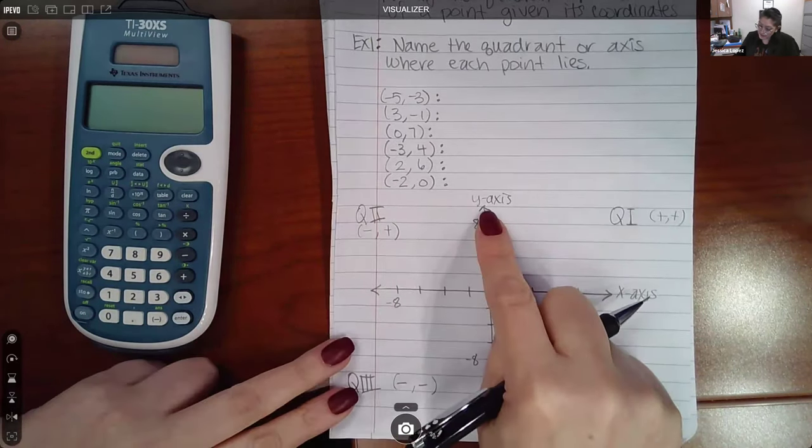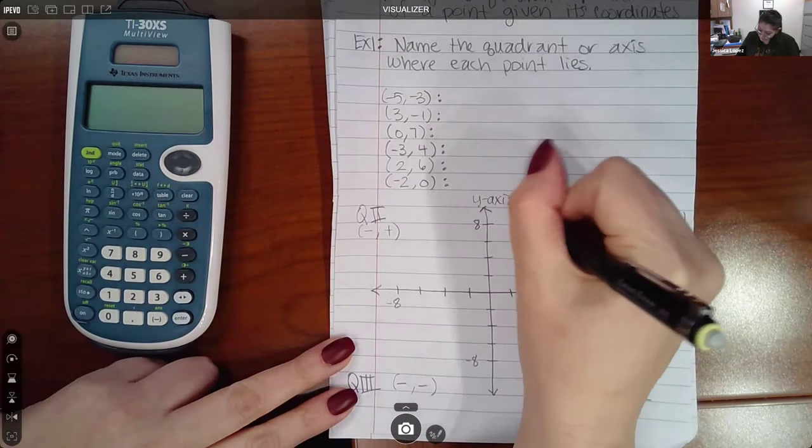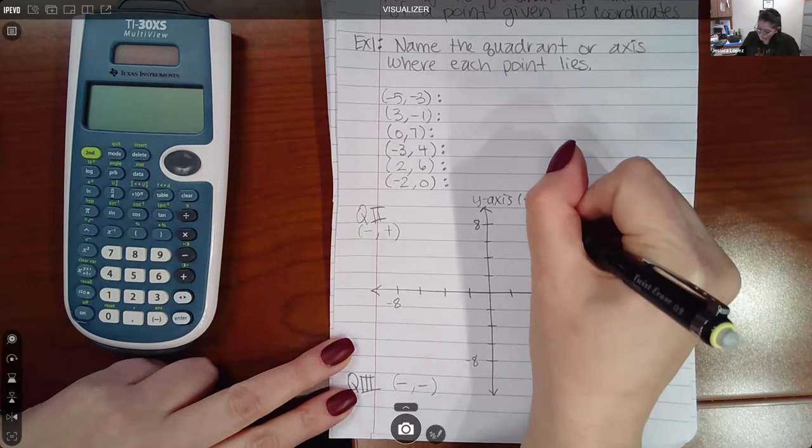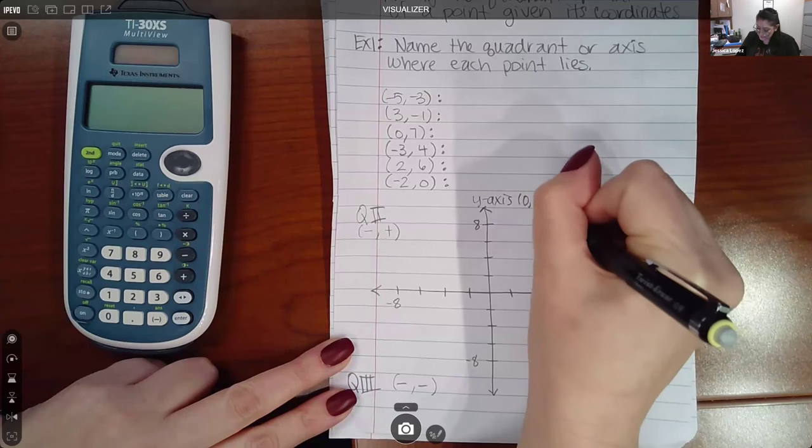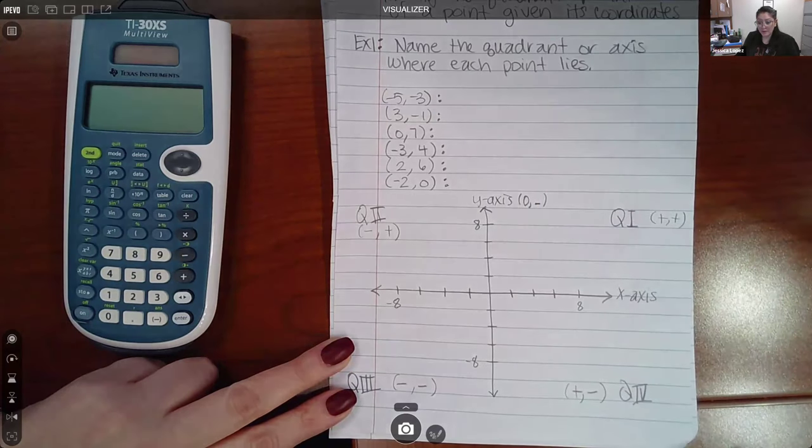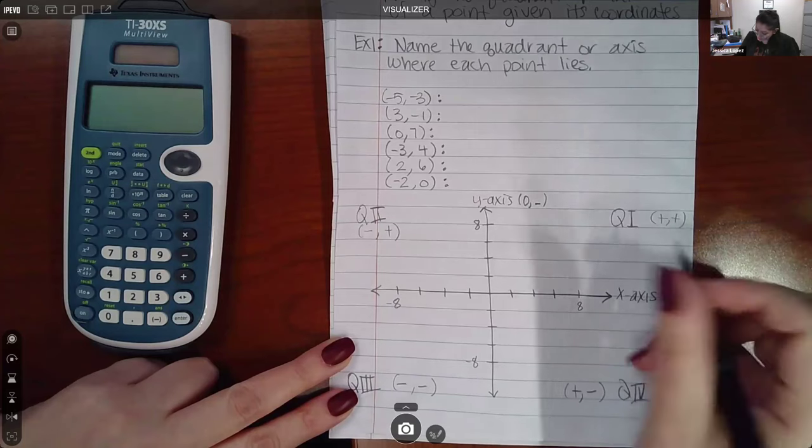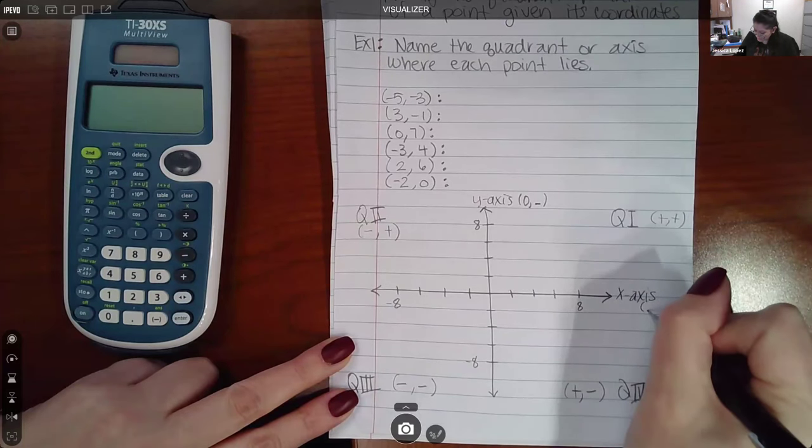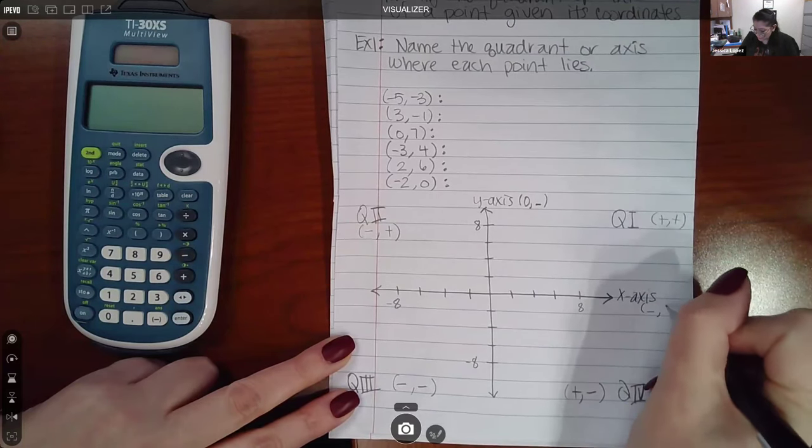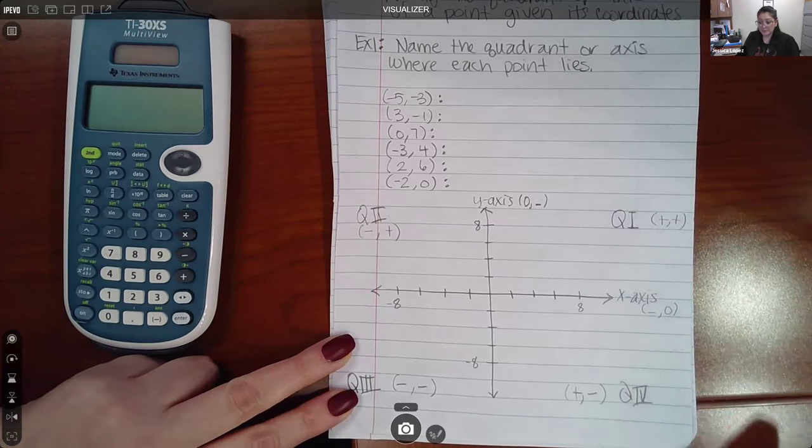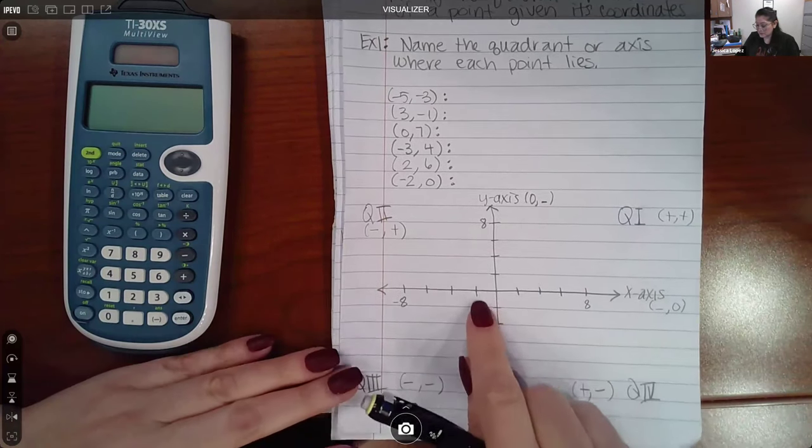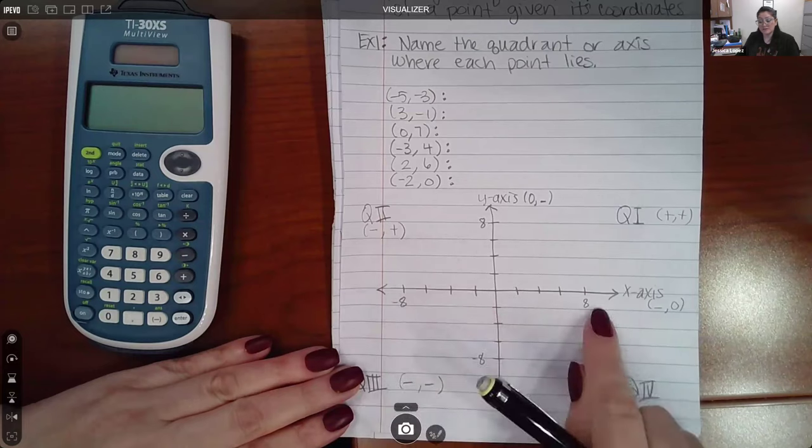Now if you're on the y-axis, the coordinates will always be zero for x and then some coordinate for y. If you're talking about the x-axis, the x value will be some coordinate, but the y coordinate will be zero. The y coordinate being zero is what makes it land on top of the x-axis.